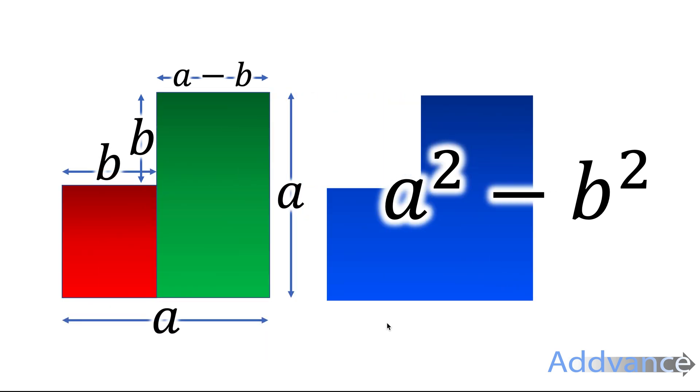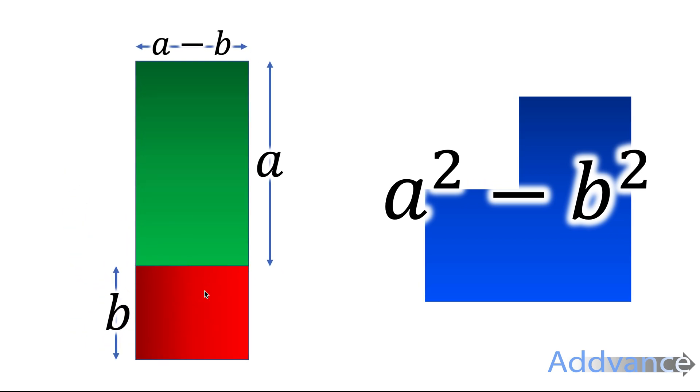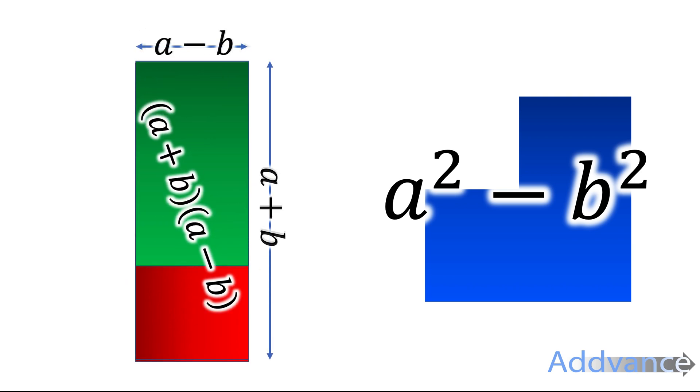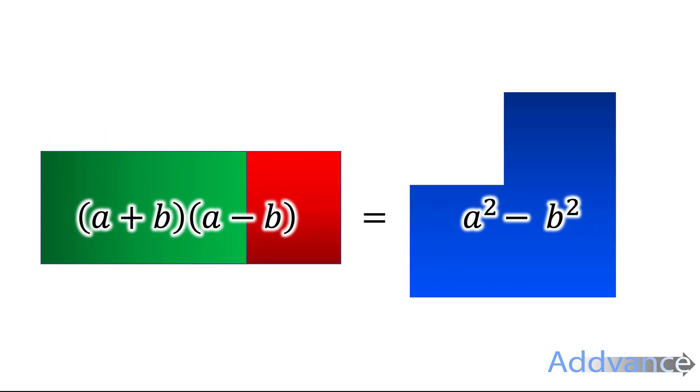We can split this up like this so we'll have it as a red and green rectangle. These two areas are still the exact same. And what we're going to do is move the red rectangle to the bottom of the green rectangle like this. The height of this rectangle is a plus b, the width is a minus b. If you multiply those we will get the area of the green and red together is (a + b) times (a - b).